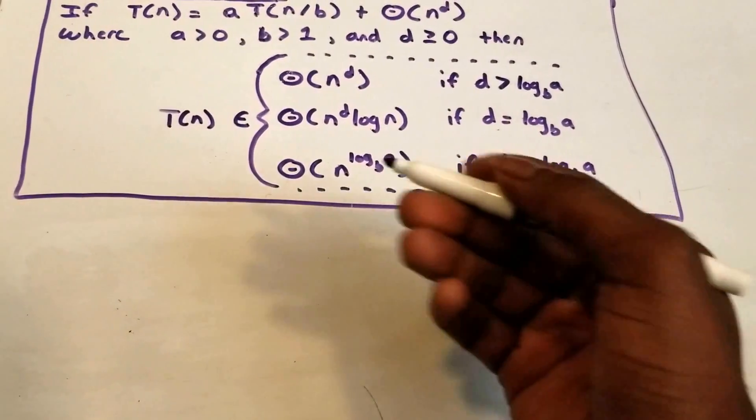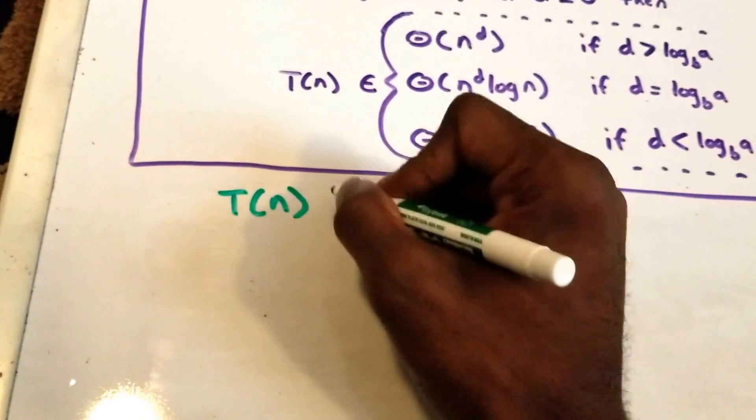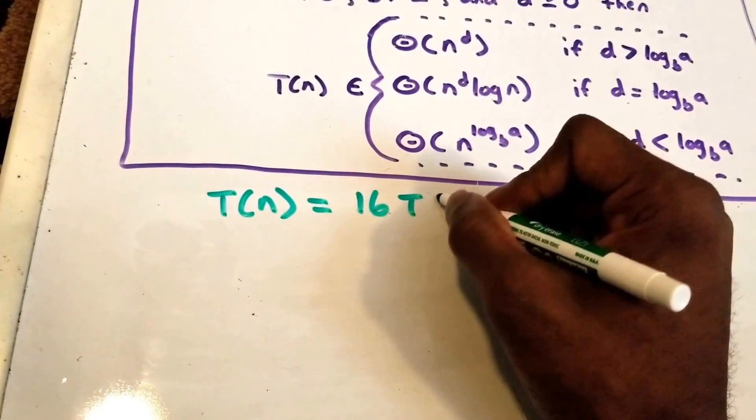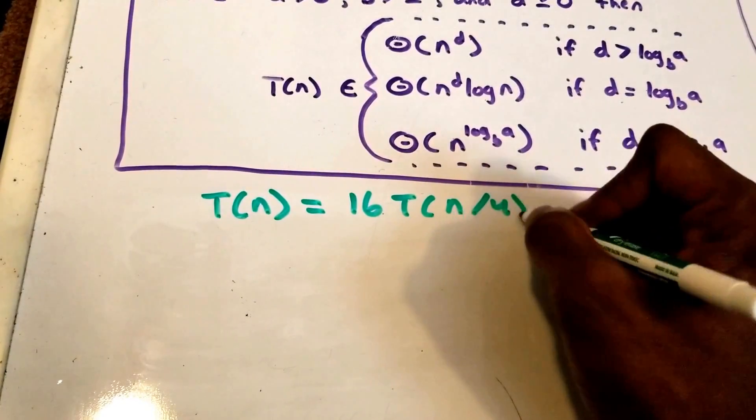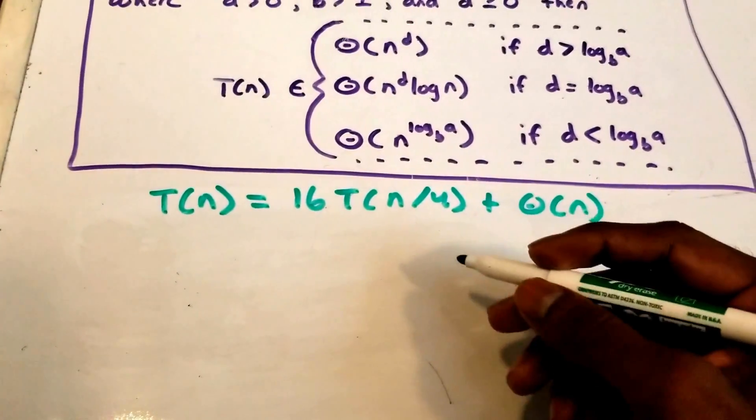All right, so let's go ahead and get started and rewrite our equation. So we have T of n equals 16 times T of n divided by 4 plus theta of n.